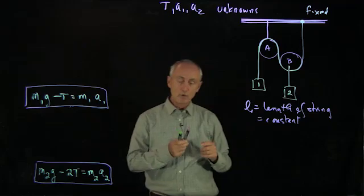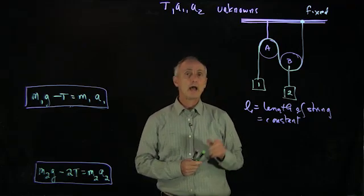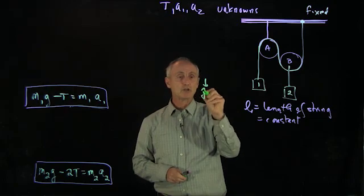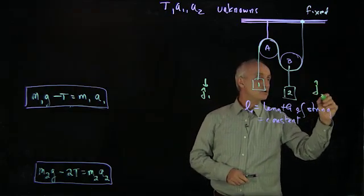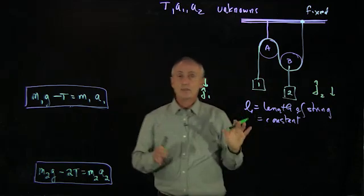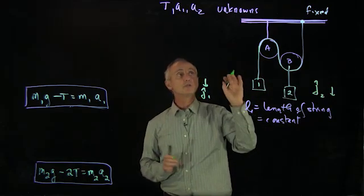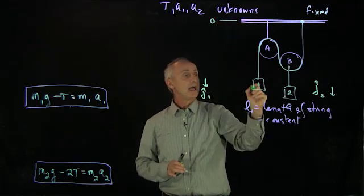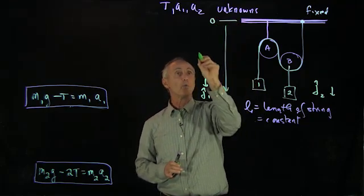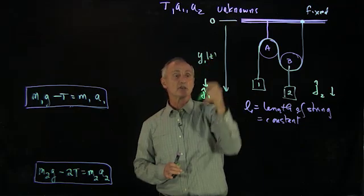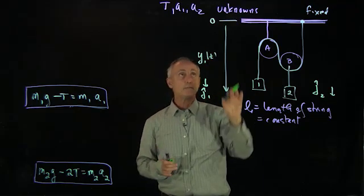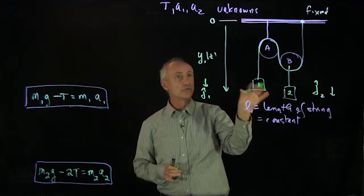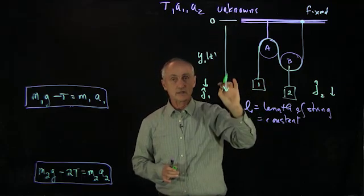This is a little bit tricky, so what we want to do is very carefully show how we introduce coordinate functions. Recall that we had j hat 1 down and j hat 2 downwards. What that implies is that we're choosing some origin, and let's choose an origin up here. For a coordinate function for object 1, it has to be consistent with our choice of what we mean by j hat 1. So in this sense, y1 is a positive quantity when we're going downward.